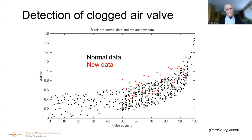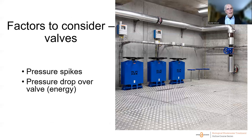We can actually observe valve behavior as part of monitoring. For an air valve, the black dots show the relationship between airflow and valve opening at one point in time. The red dots, taken at a later occasion, show a different airflow behavior — indicating something abnormal in the valve. By measuring airflow and valve opening together, we can detect the valve's behavior, essentially monitoring equipment to ensure it is operating properly.